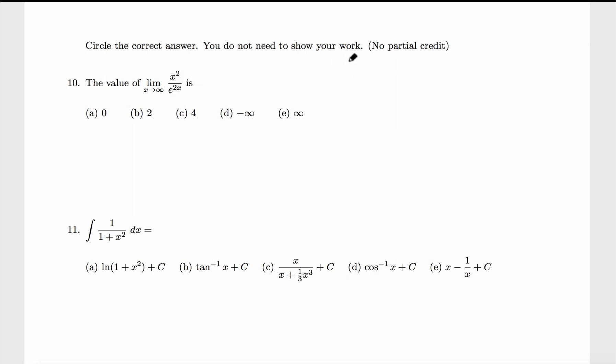We got limit of x squared over e raised to 2x when x goes to infinity. When x is very big, x squared is even bigger, so infinity. E raised to 2 times infinity is also big, so infinity over infinity. That means we can apply L'Hopital's rule for this limit.